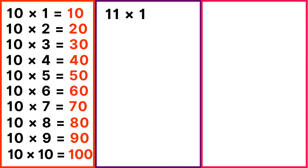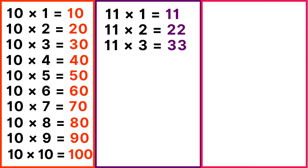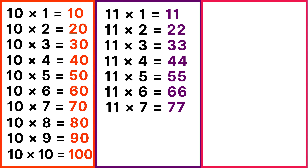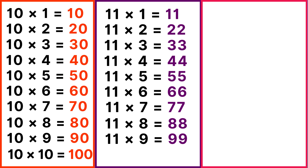Table of 11: 11 ones are 11, 11 twos are 22, 11 threes are 33, 11 fours are 44, 11 fives are 55, 11 sixes are 66, 11 sevens are 77, 11 eights are 88, 11 nines are 99, 11 tens are 110.